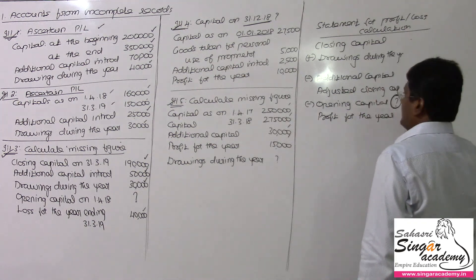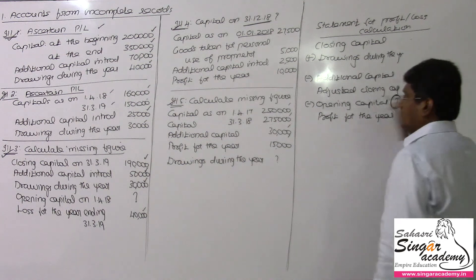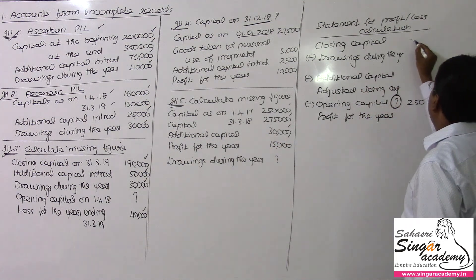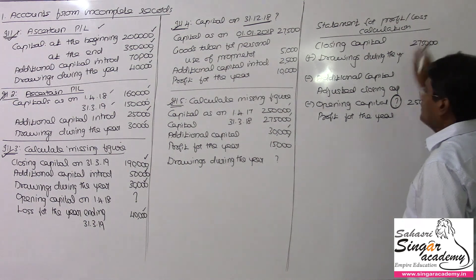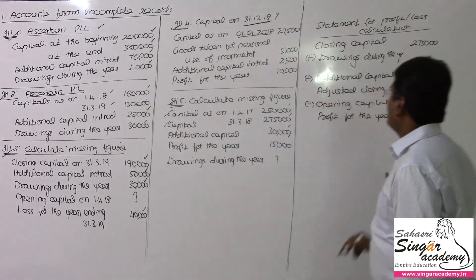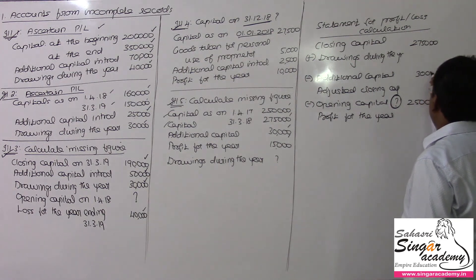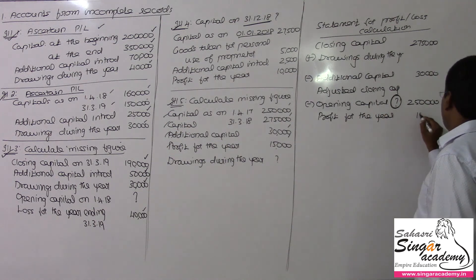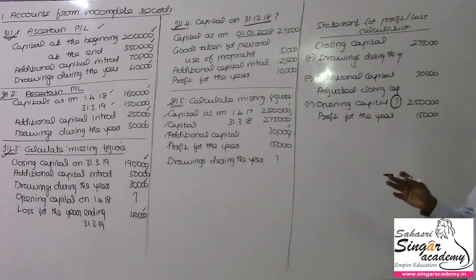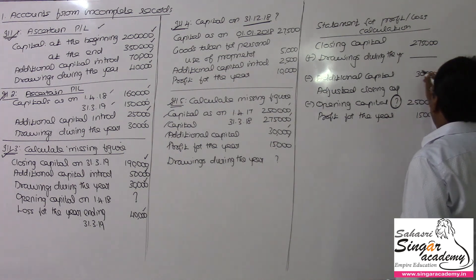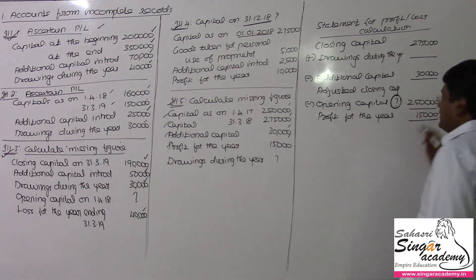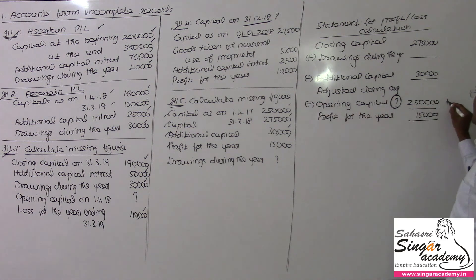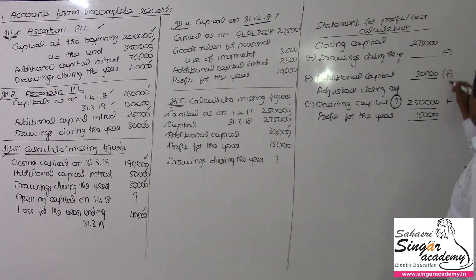Opening capital is 2,50,000. Closing capital is 2,75,000. Additional capital is 30,000 rupees, and profit for the year is 15,000 rupees. We know that additional capital less adjusted closing capital — either minus — you will be getting the profit for the year. Reverse calculation: minus, plus, minus, plus, plus, minus — that is how you can reverse the symbol and work out.